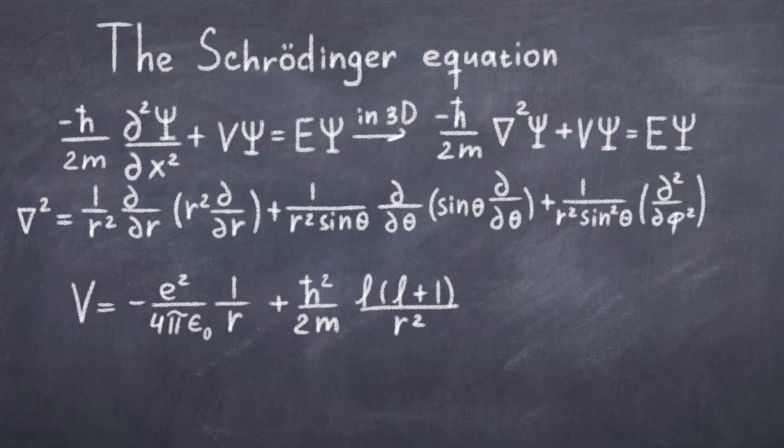The first term is just the Coulomb potential, and the second term is the centrifugal term. In this case, m is just the mass of the electron, e is the electron charge, and epsilon naught is the vacuum permittivity, and l is the angular quantum number associated with the angular momentum.